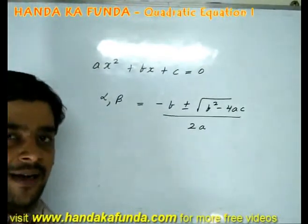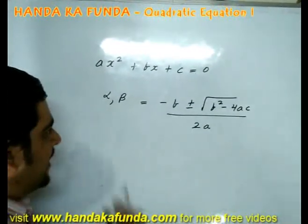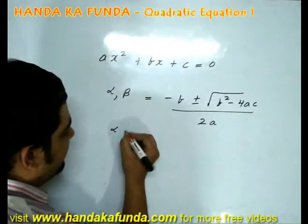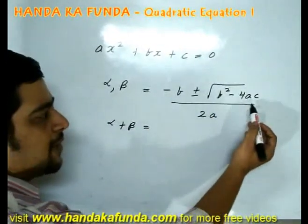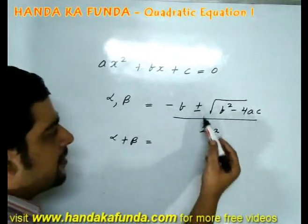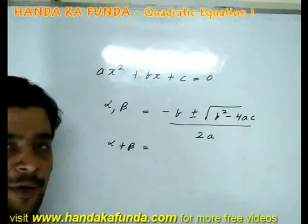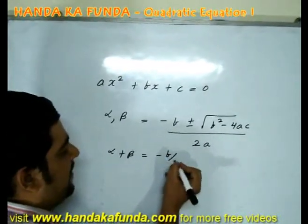If we look at this formula a little closer, plenty of other things emerge. Sum of the roots, that is alpha plus beta. Take one of the roots as minus b minus square root of b square minus 4ac upon 2a. Take the other root as minus b plus square root of b square minus 4ac upon 2a. If you add them out, what will emerge is minus b by a.